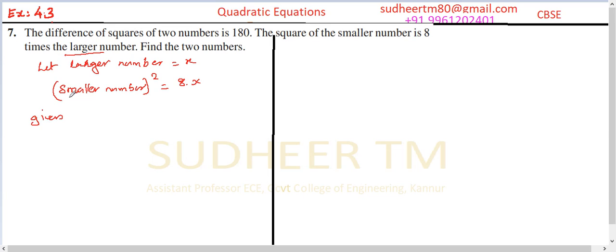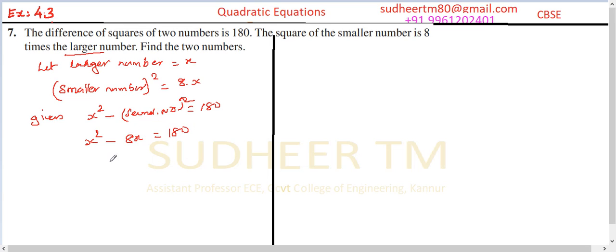The difference of squares of two numbers means the first number squared minus the second number squared equals 180. So X squared minus the second number squared, which is 8X, equals 180. Therefore: X squared minus 8X minus 180 equals 0.